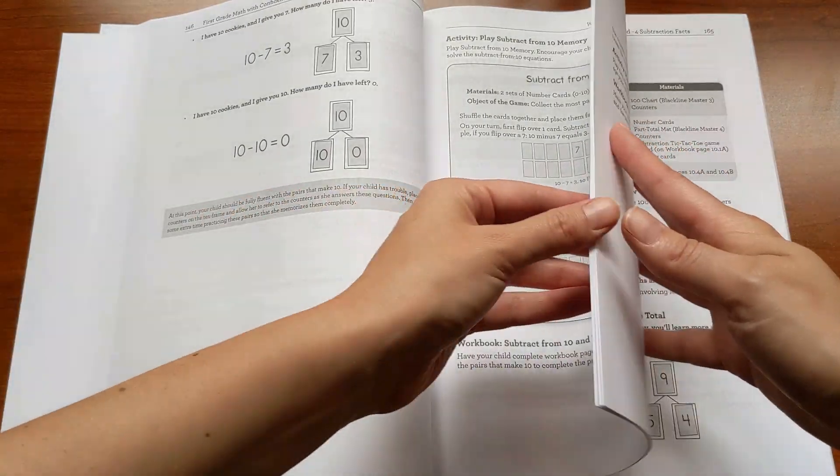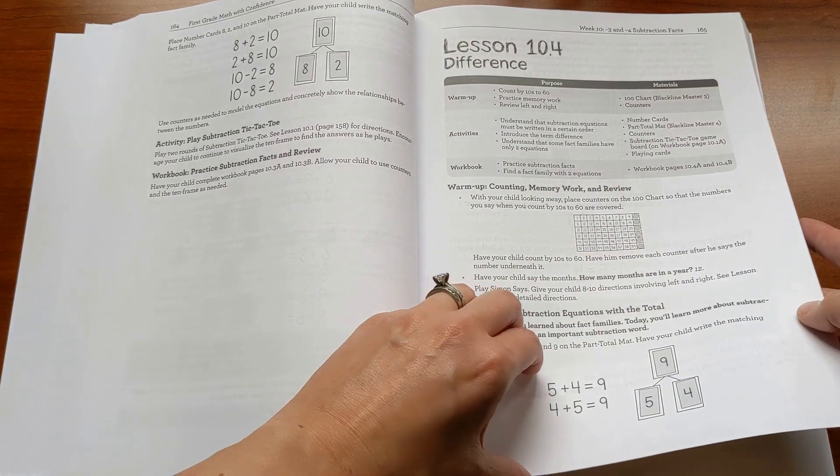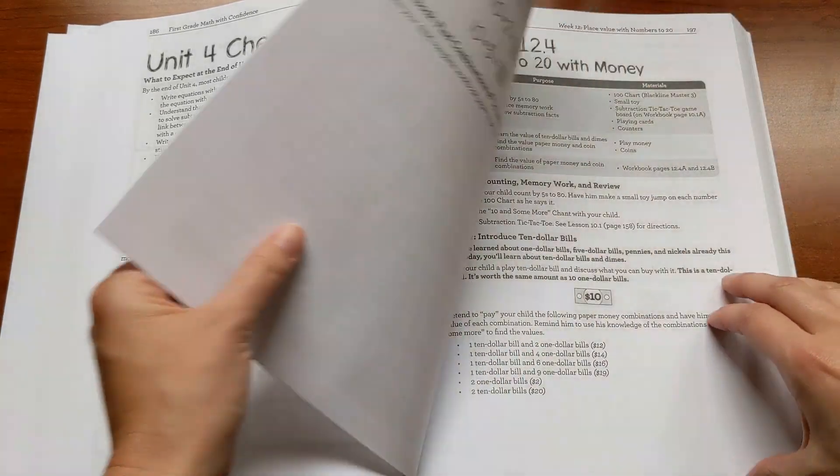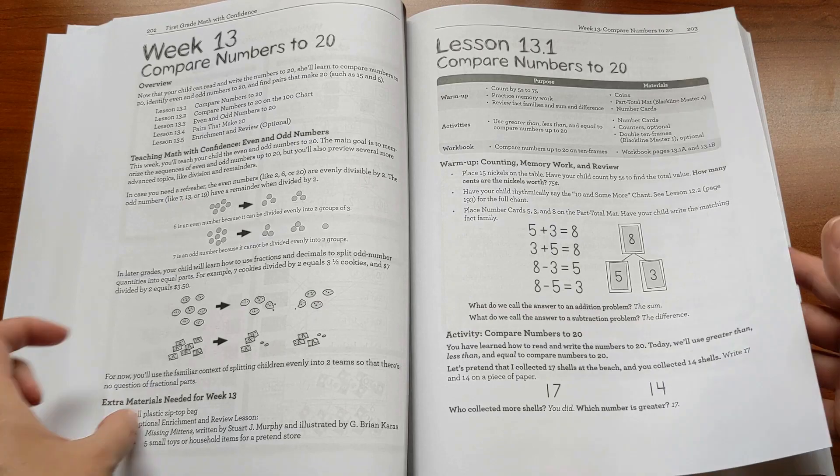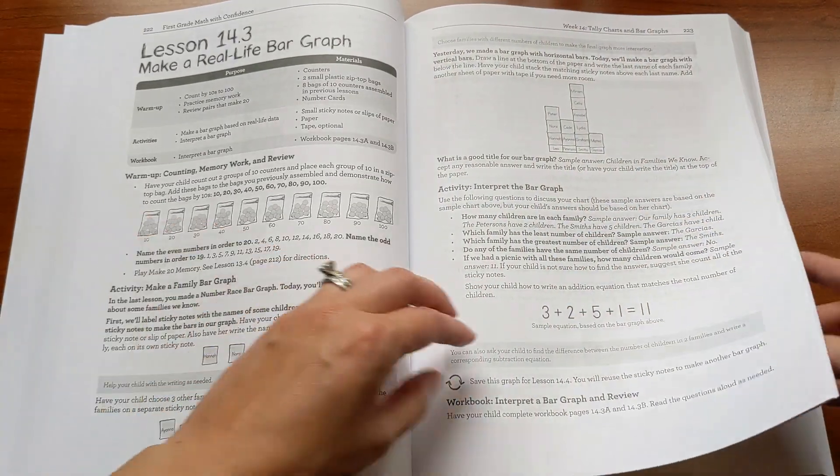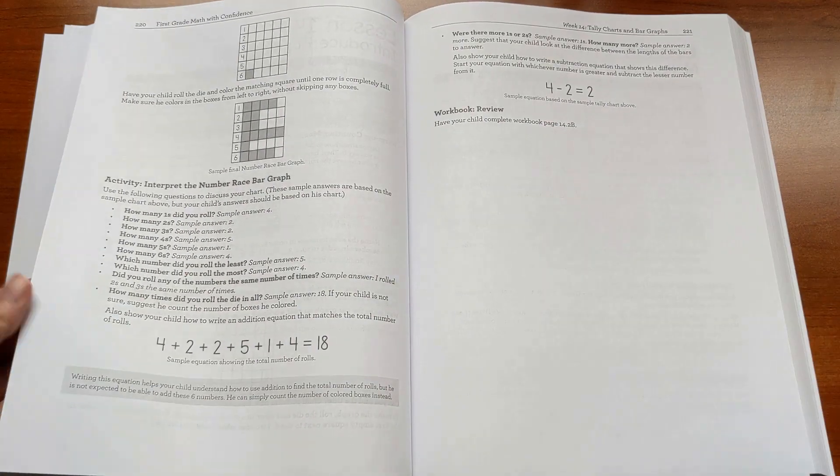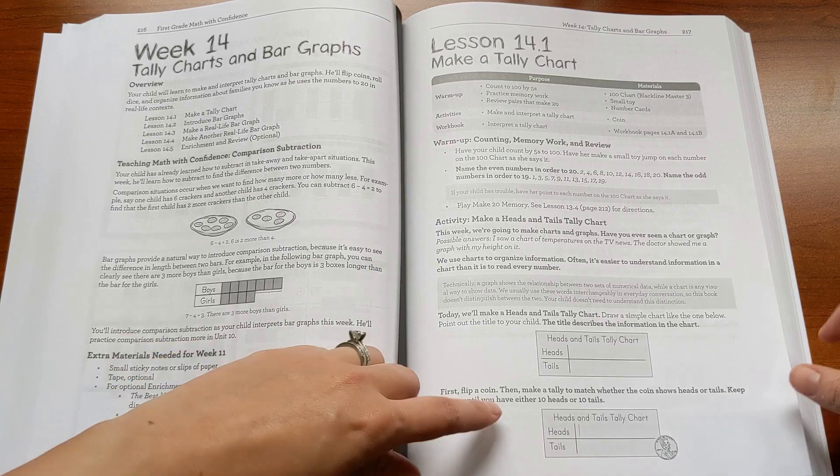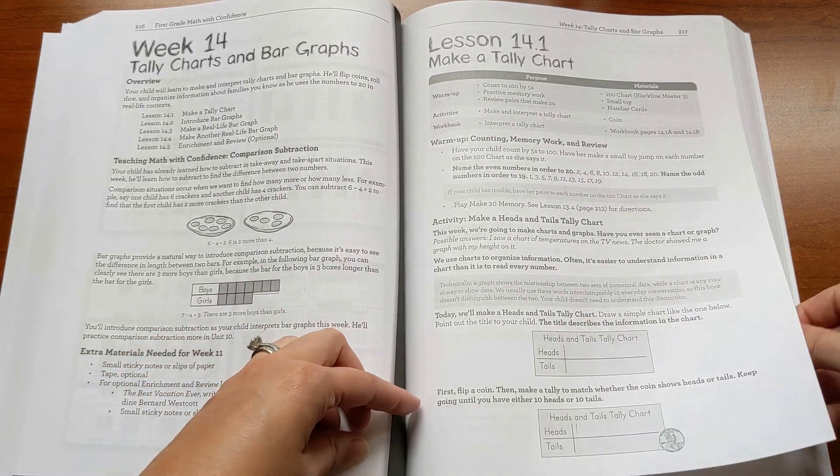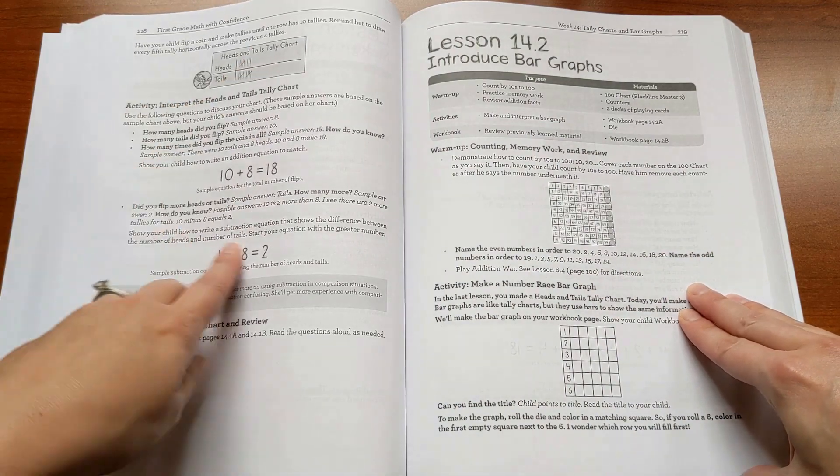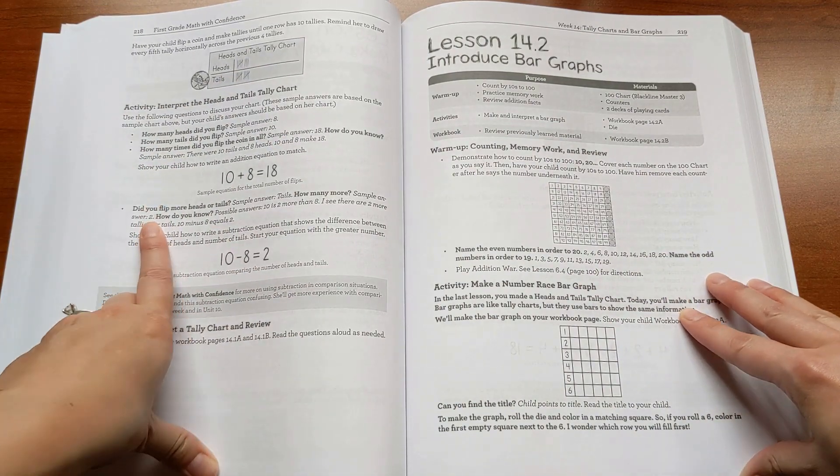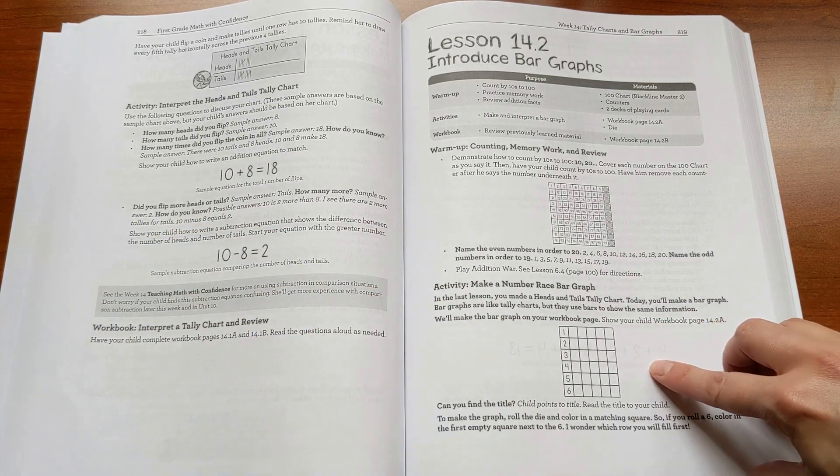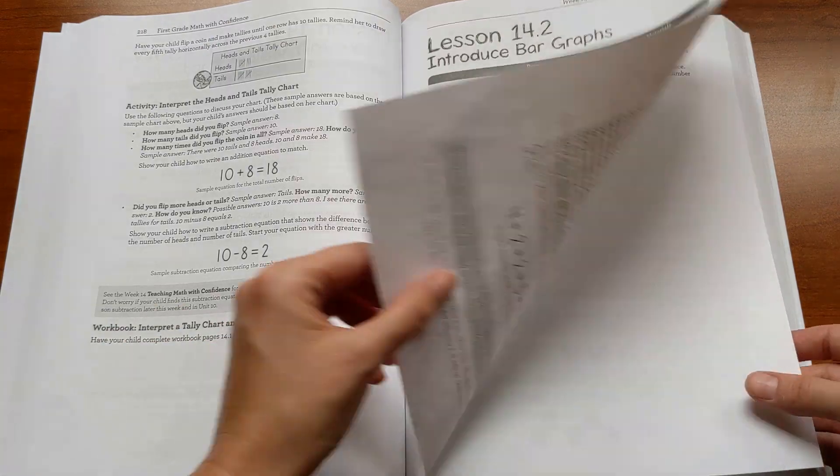As we move through, you'll see that it goes from basic addition and subtraction facts, but then starts to get more complicated as you get through the year. Working on understanding place value and numbers to 20, working with money and comparing numbers to 20, making bar graphs. This is a real fun one, a real favorite for a lot of kids. For example, here's a lesson on making a tally chart, where you'll flip a coin, take tallies of how many heads and how many tails you get, and then use that to answer some word problems. Here's a similar bar graph lesson where you roll a die and make a bar graph of the results.